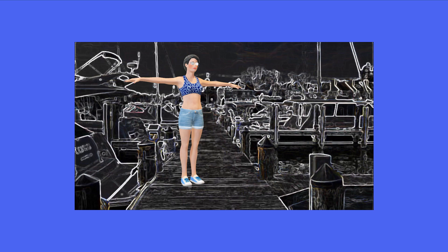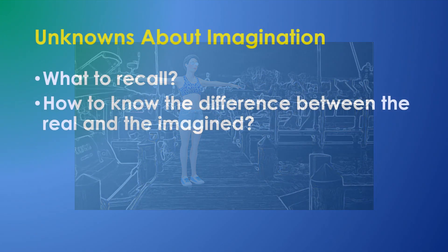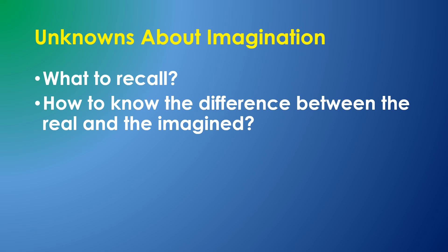So this simple description of imagination brings up some interesting questions. How does your brain decide what to imagine? And how does it differentiate between real and imagined objects?